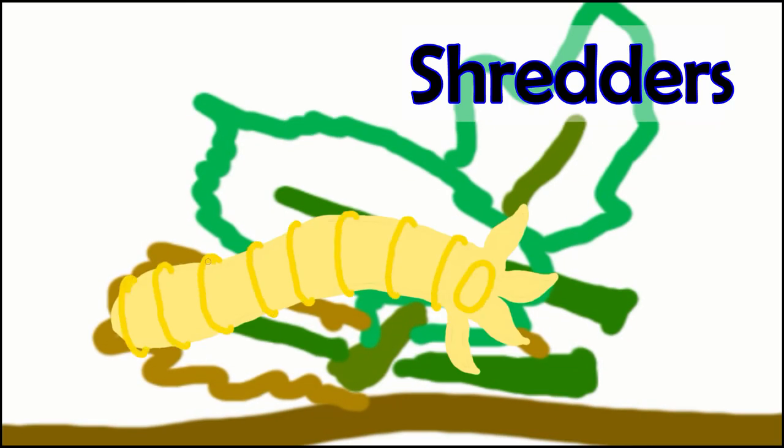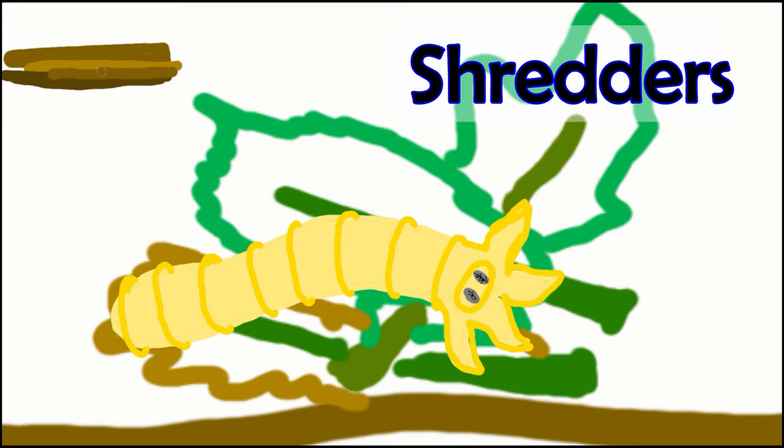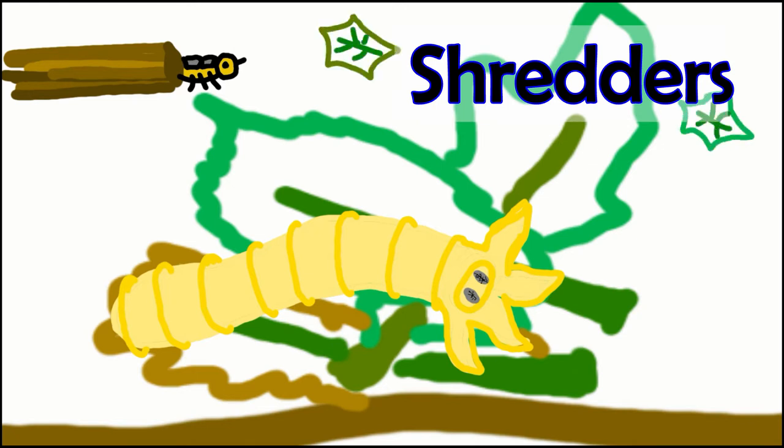This is a crane fly larva and a caddisfly larva. They are shredders. It is their job to find large leaves and pieces of wood that have fallen into the water. They will eat off of them and shred these large pieces into smaller, more manageable pieces. These smaller pieces will get swept into the water column and continue down the stream.